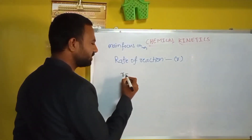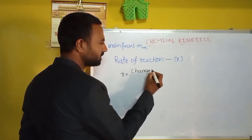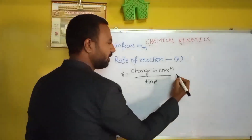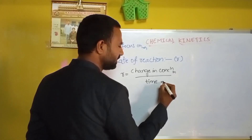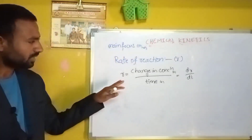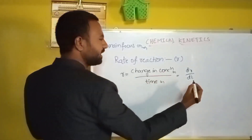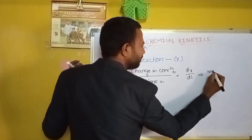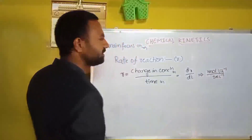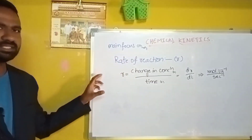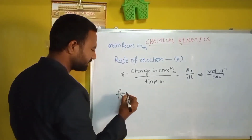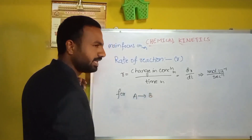The equation for rate of reaction is: r equals dx/dt, where dx is change in concentration and dt is change in time. The units of rate of reaction are moles per liter per time, or you can take time inverse. For example, taking the reaction A giving B, we can write the rate equation in terms of reactant and product.